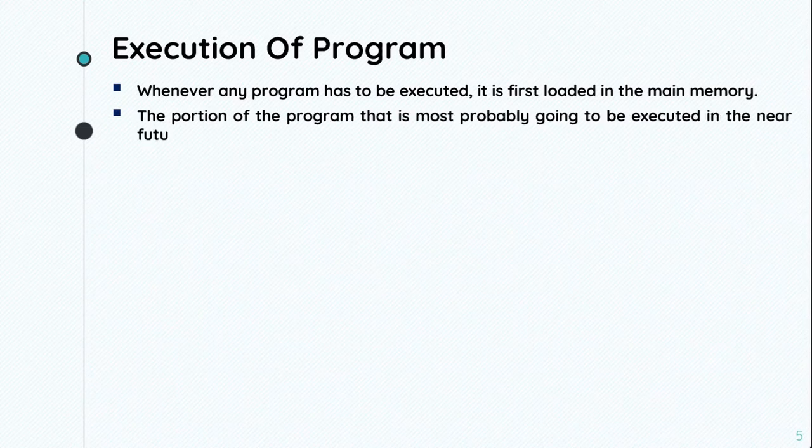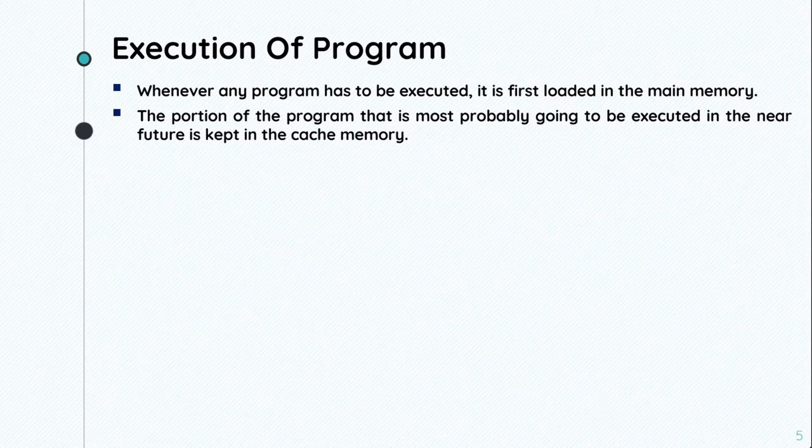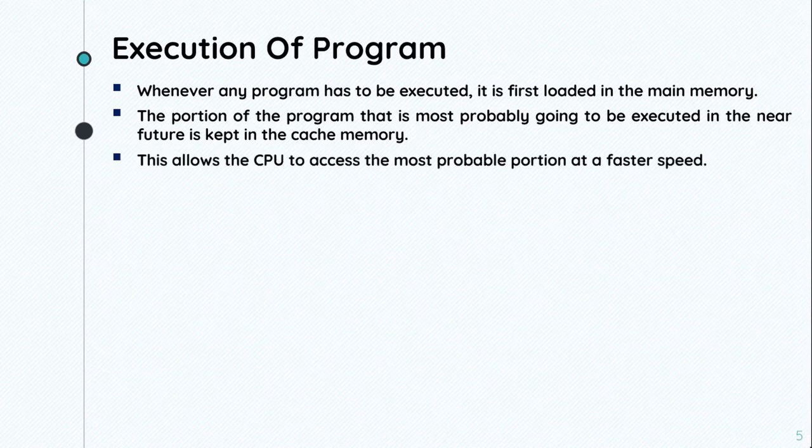The portion of the program that is most probably going to be executed in the near future is kept in the cache memory. We load the main memory so that this part of the near future will execute in the cache memory. This allows the CPU to access the most probable portion at a faster speed.